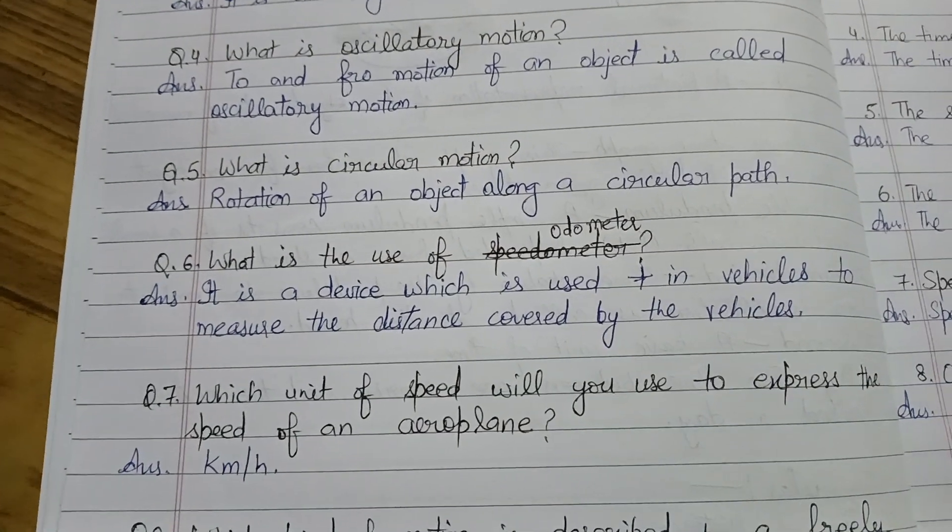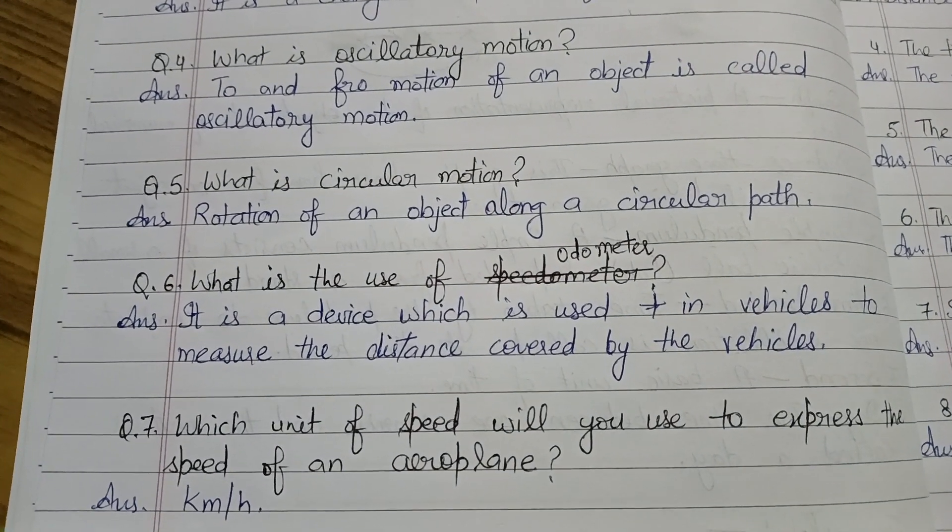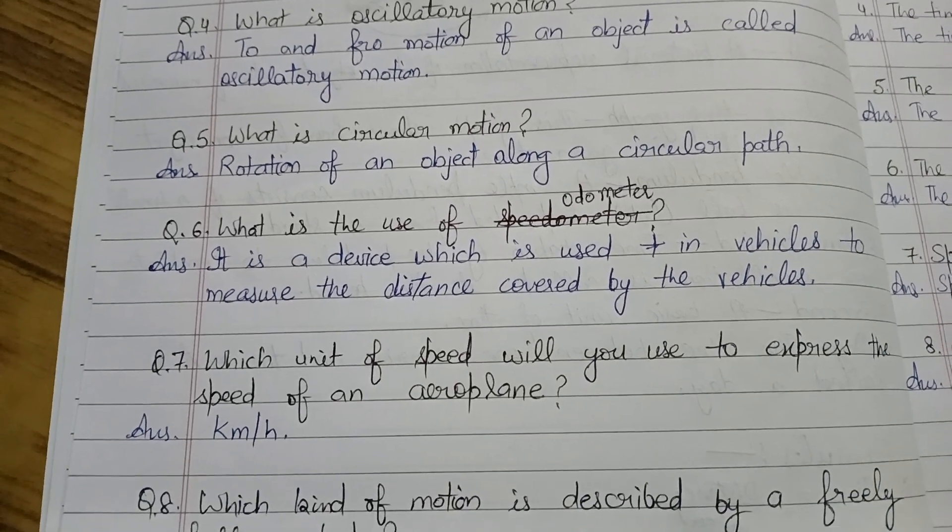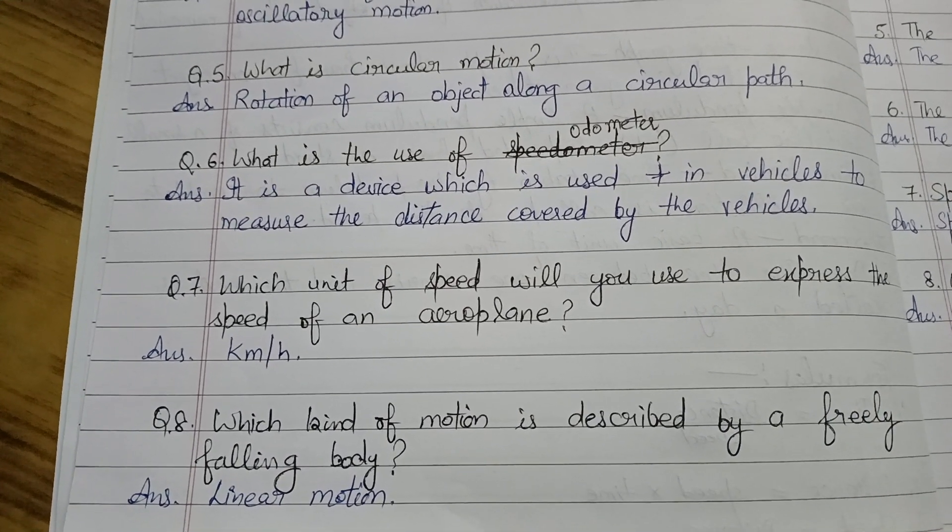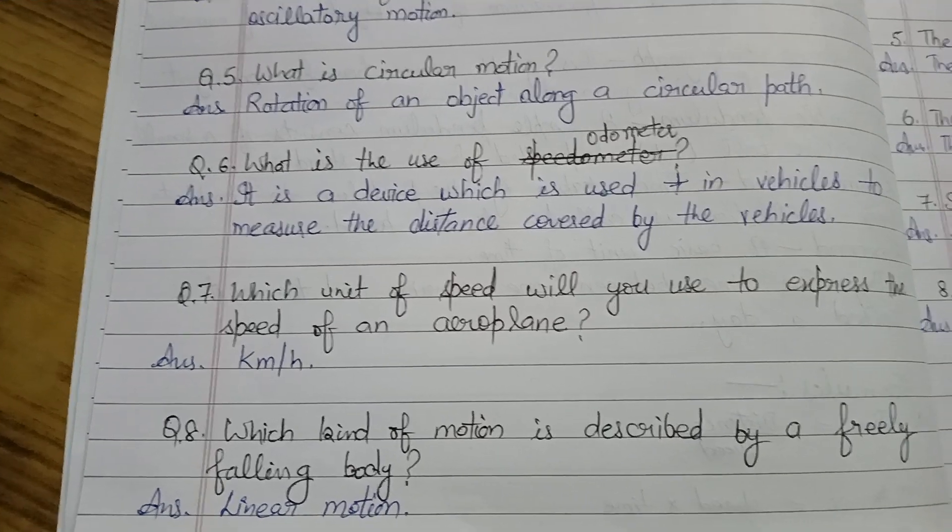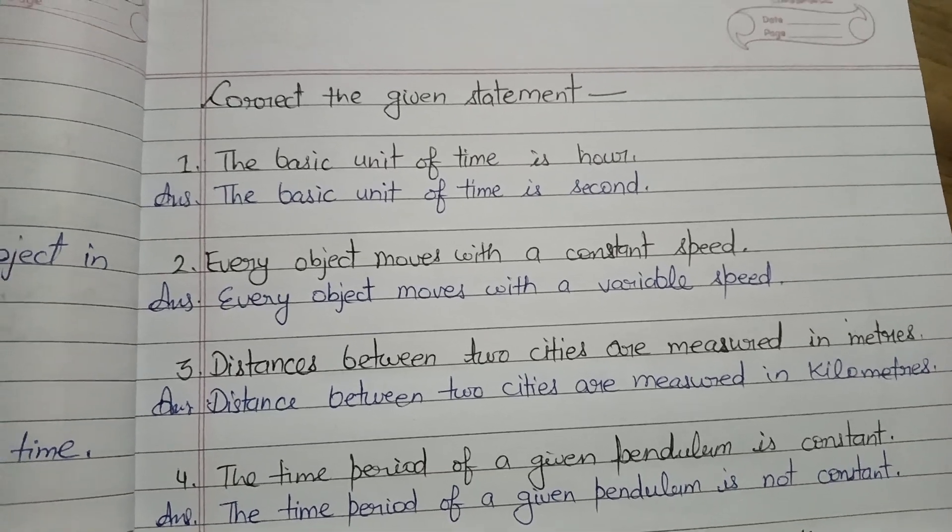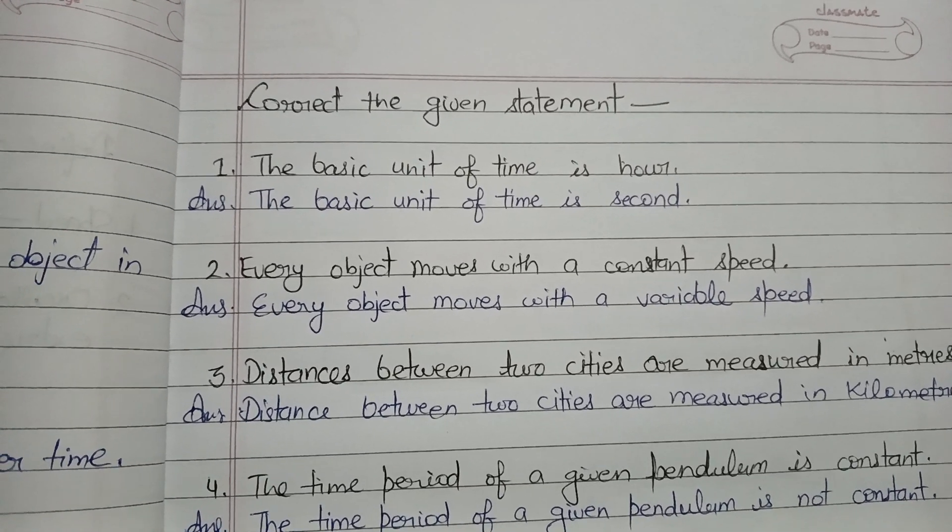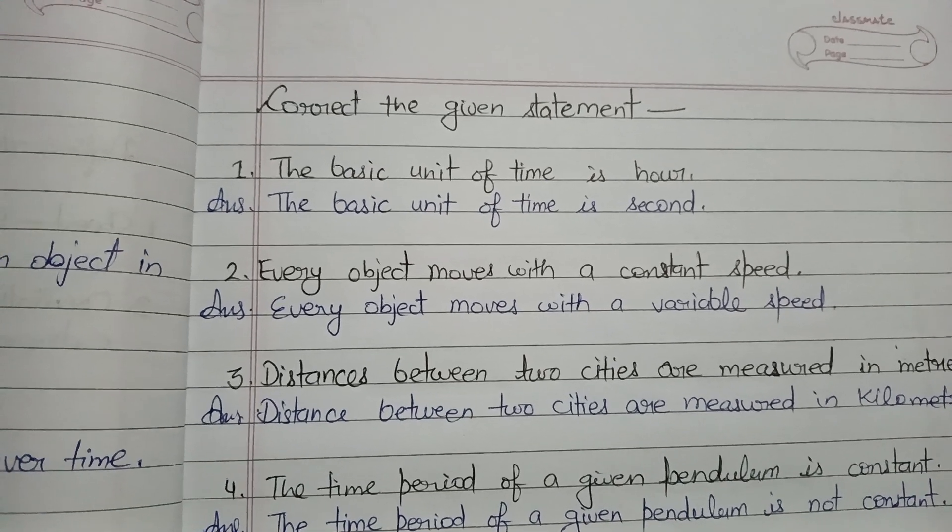Speedometer speed ke baare mein batata hai. Unit of speed hum use karenge aeroplane ki speed ko batane ke liye - that is km per hour. Aur freely falling jo body hai, wo kaun sa motion use karegi - linear.